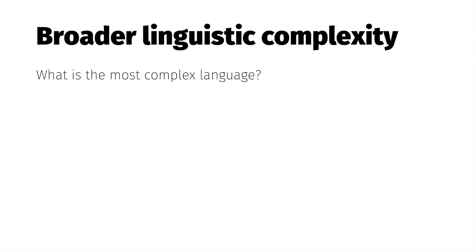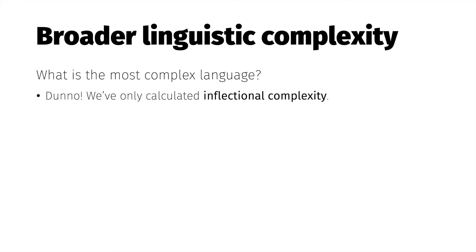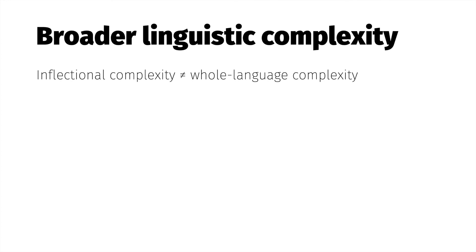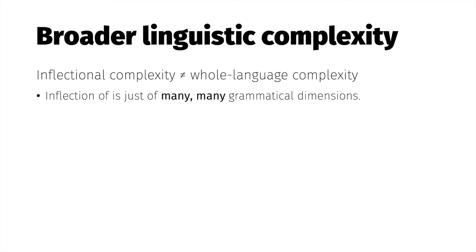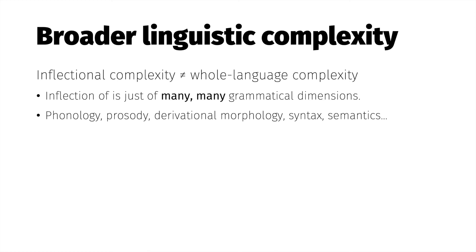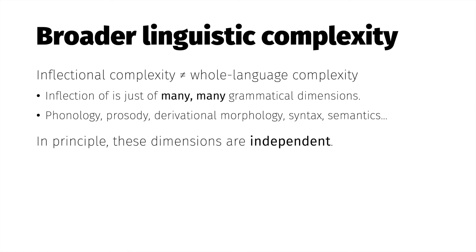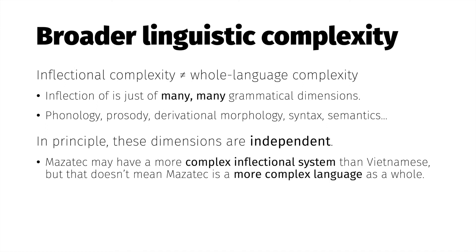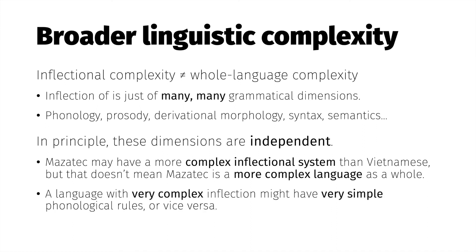Let's return to the question I started the video with: are some languages more complex than others? I've only answered a much narrower question, focusing on inflectional complexity. It's very common for non-linguists, and even some linguists, to conflate inflectional complexity with broader linguistic complexity — perhaps because rich inflection is so flashy, and languages with it tend to be less familiar. But this is a fallacy. Inflection is but one of many grammatical dimensions. Besides inflection, speakers must also internalize principles governing how sounds combine into words, how words combine into sentences, what meanings a sentence can have, and so on. All of these dimensions are entirely independent — Mazatec may be more inflectionally complex than Vietnamese, Russian, or Estonian, but from that we cannot conclude it is a more complex language as a whole, since a language with very complex inflection might have a much simpler phonological system, or vice versa.